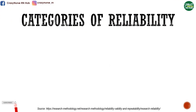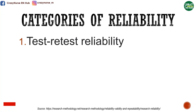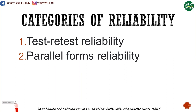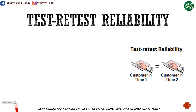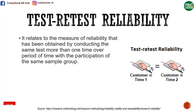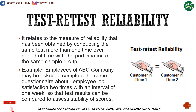We have categories of reliability: test-retest reliability, parallel forms reliability, and inter-rater reliability. First, let's discuss test-retest reliability. It relates to the measure of reliability obtained by conducting the same test more than one time over a period of time with the participation of the same sample group. For example, employees of ABC company may be asked to complete the same questionnaire about employee job satisfaction two times with an interval of one week, so that test results can be compared to assess stability of scores.